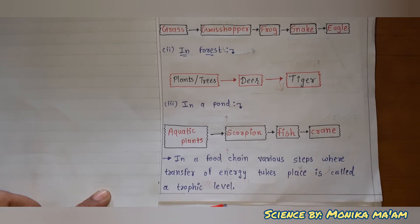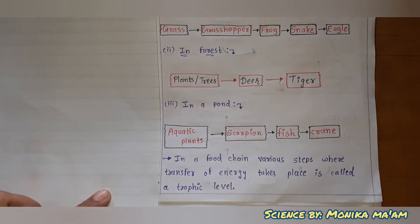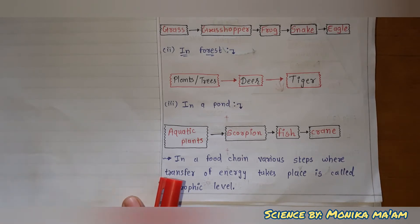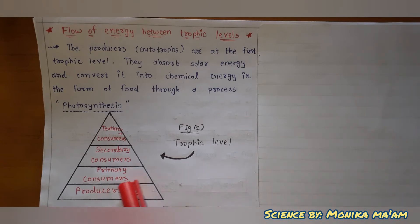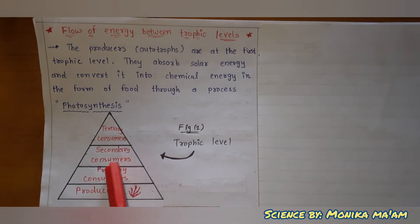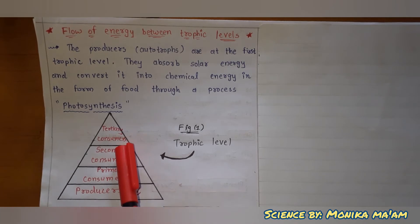In a food chain, the various steps where transfer of energy takes place are called trophic levels. Just as the food chain progresses step by step, energy is also transferred at each step. The first step consists of producers. Producers are eaten by primary consumers, primary consumers lead to secondary consumers, and secondary consumers lead to tertiary consumers.